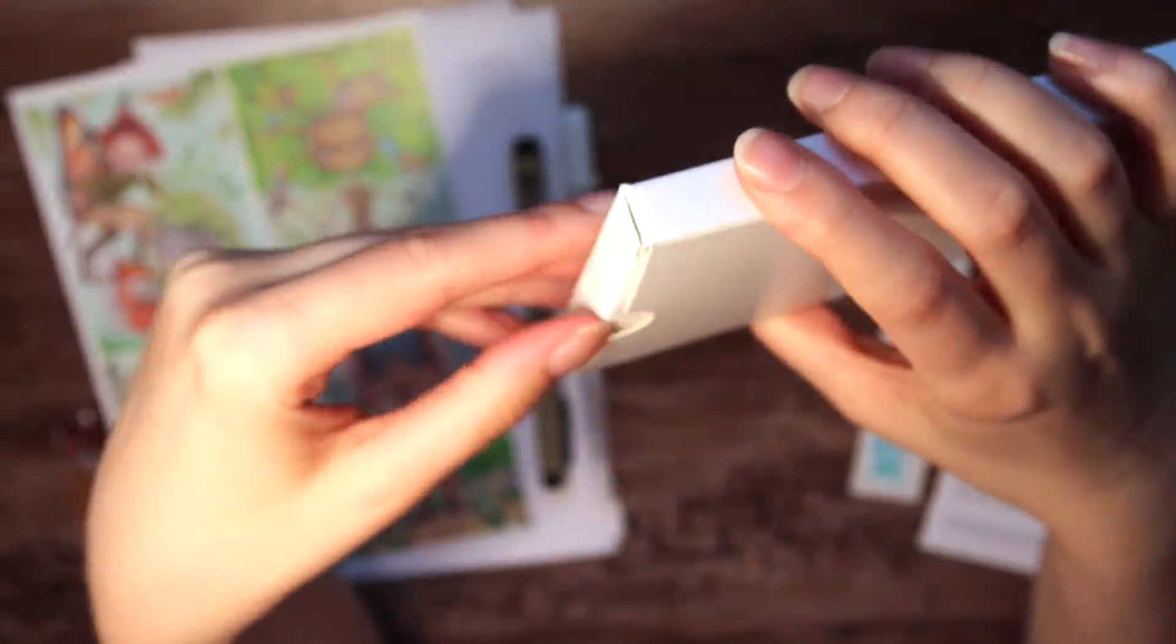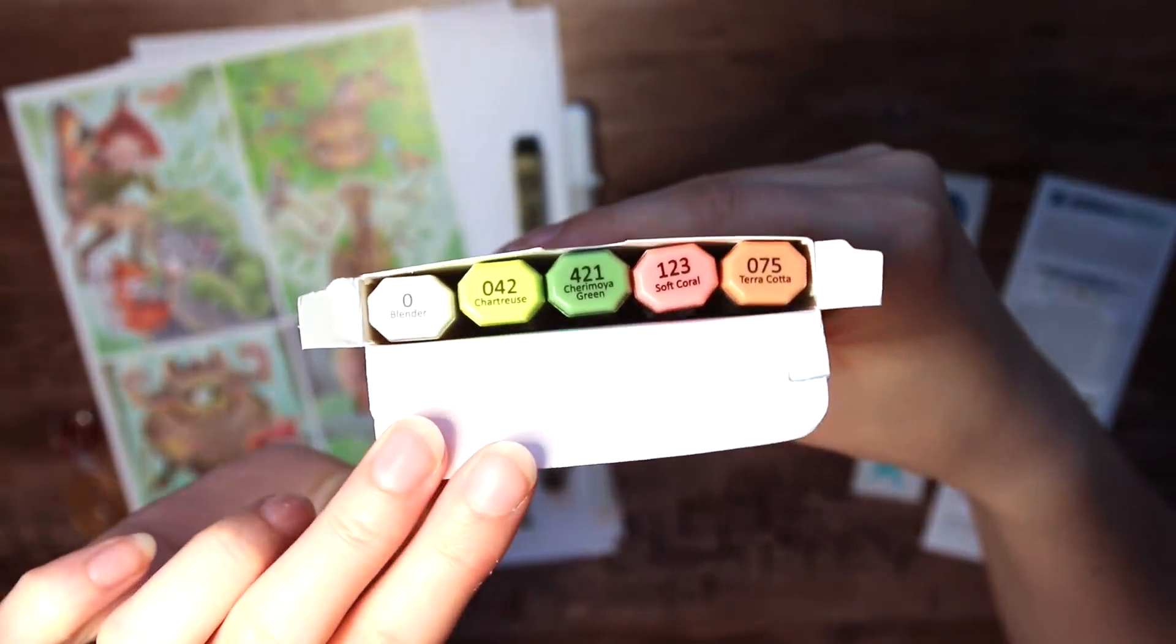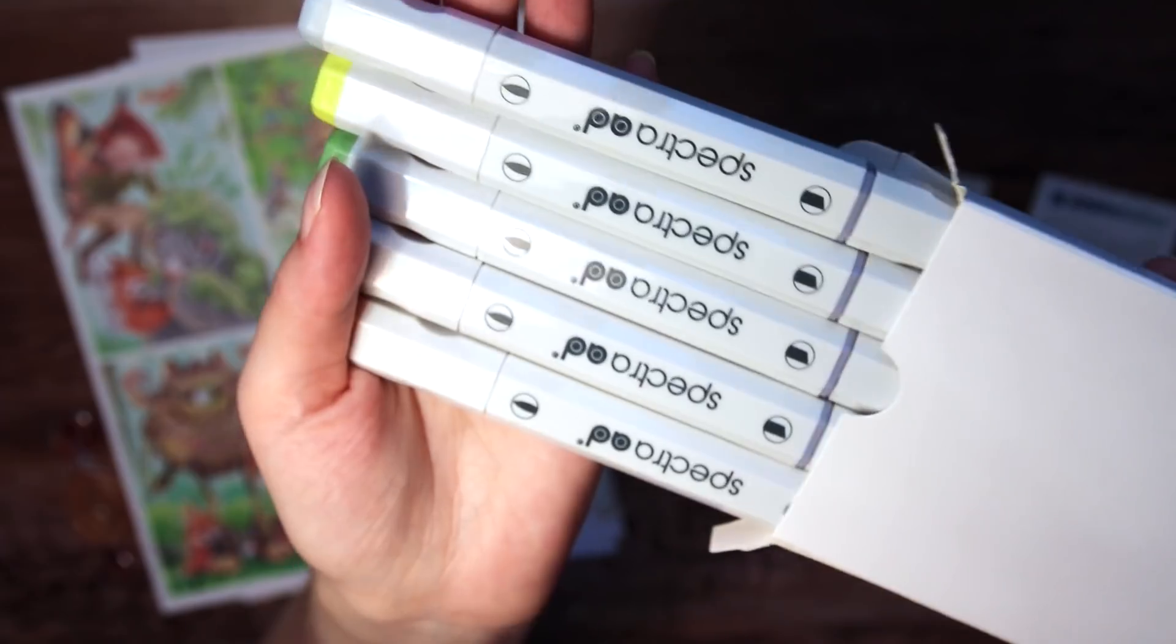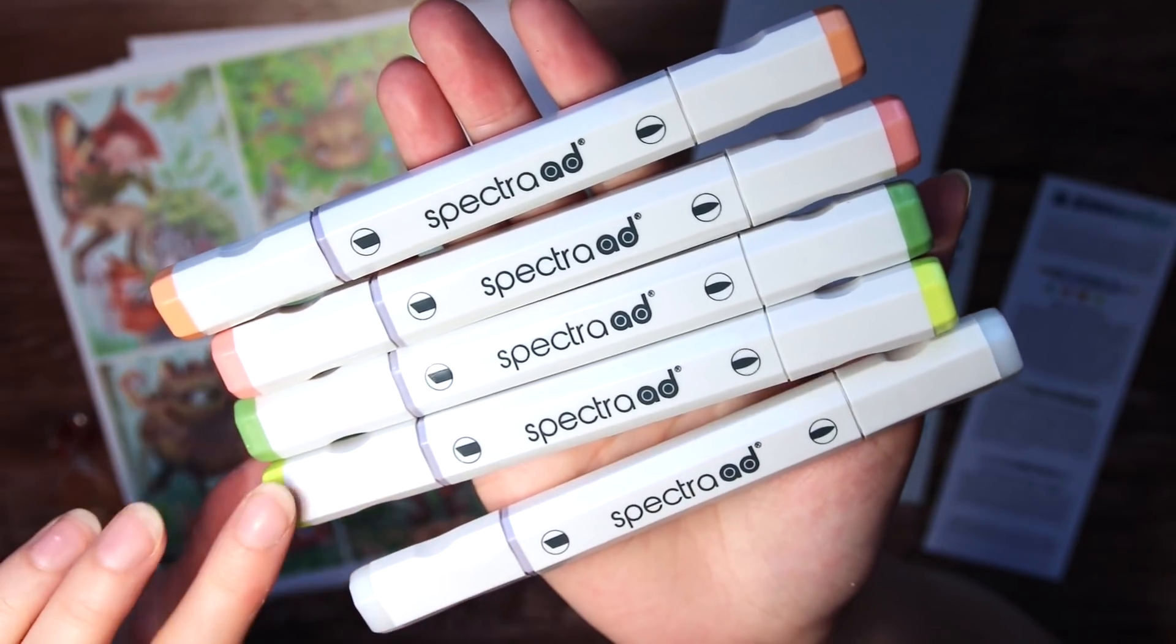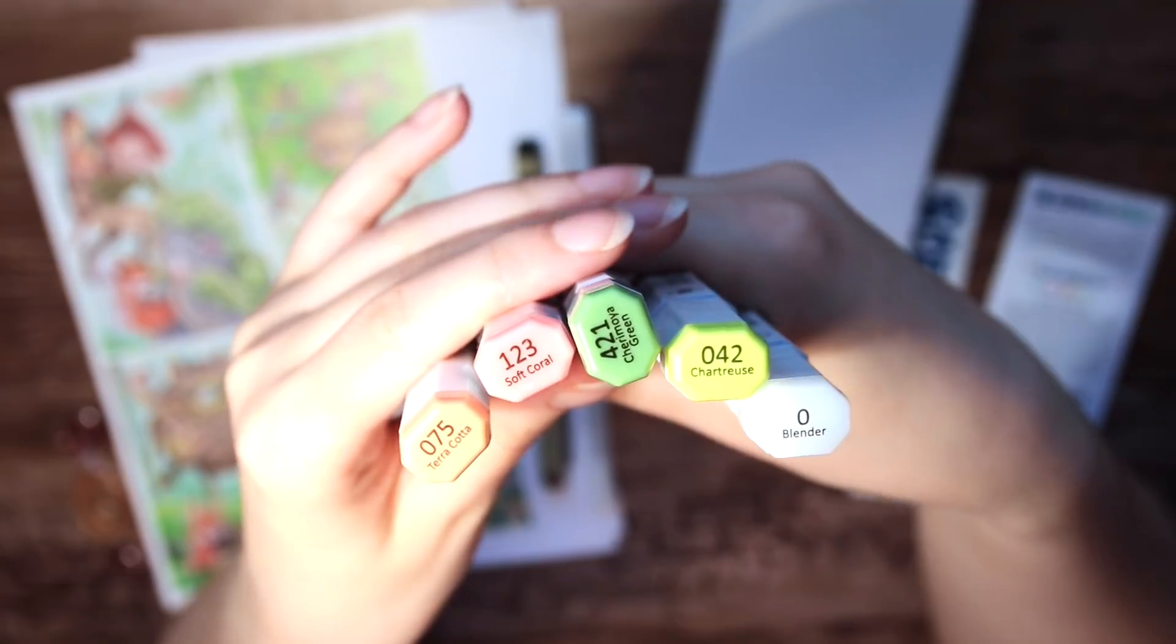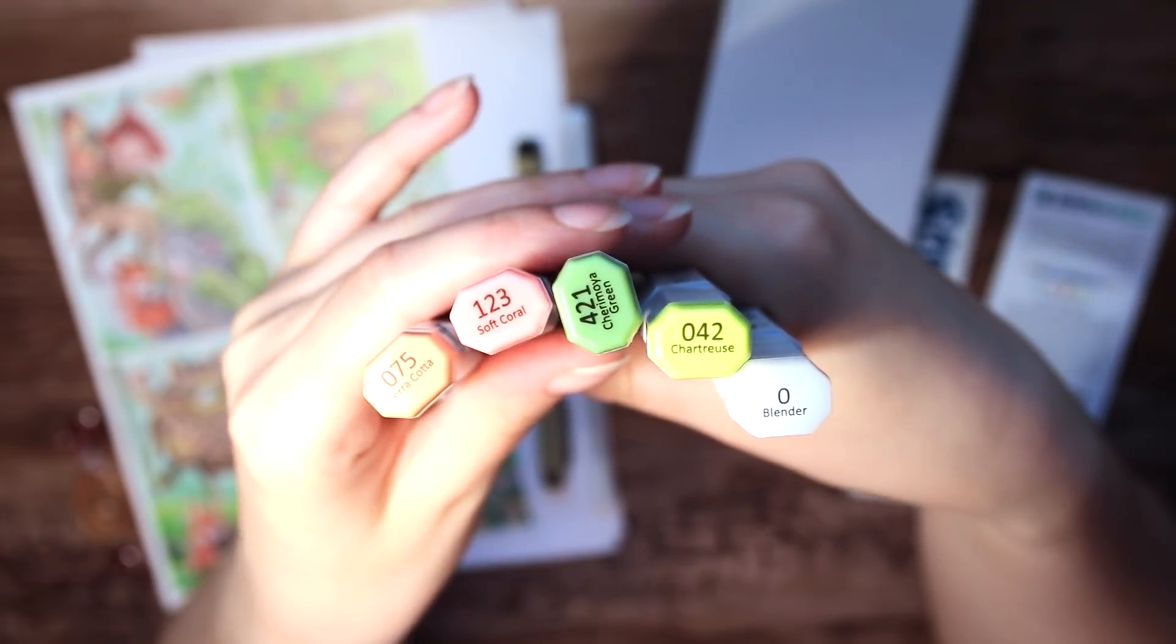And next we have this cute little package and look how adorable the colors are inside, so summery and delicious. These are the Spectra AD or ADD markers, which I have tried before. I don't remember if I like them or not, so I will find out again today.